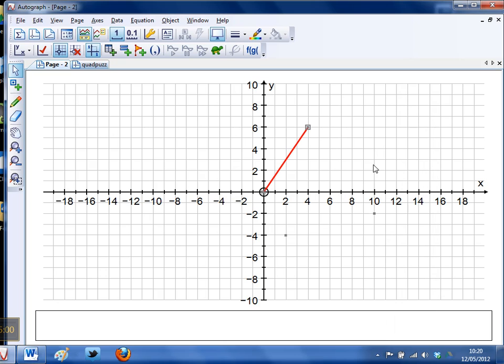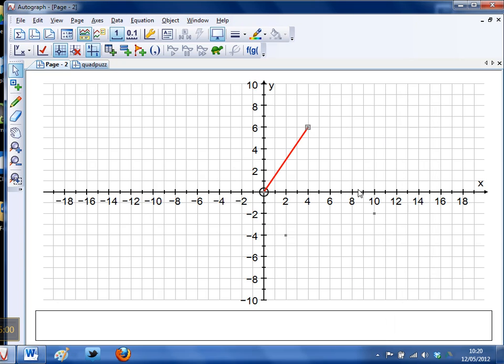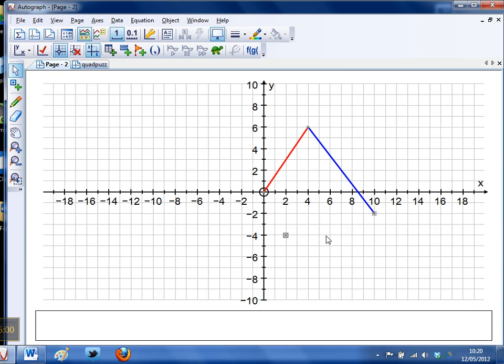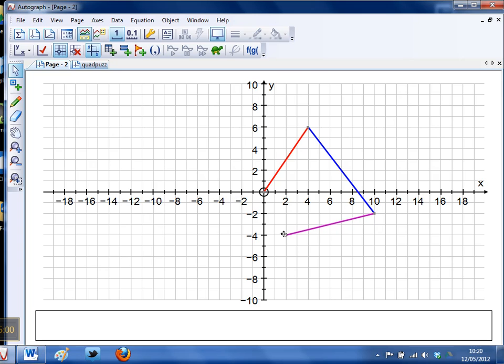Click to deselect, there to there, right-click line segment, there to there, right-click line segment, and there to there.